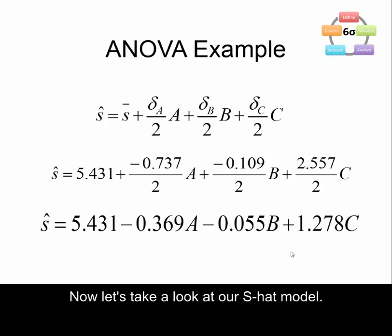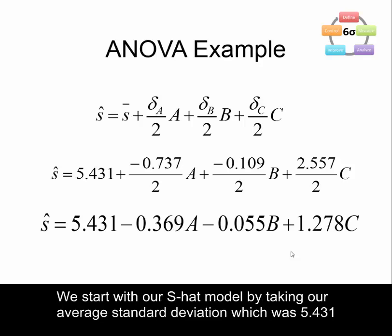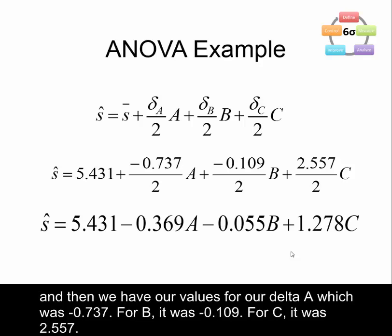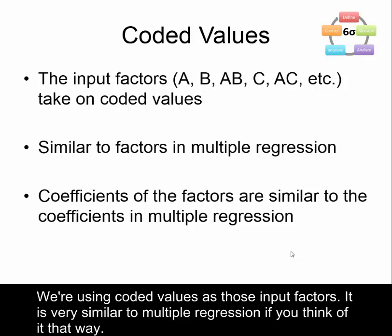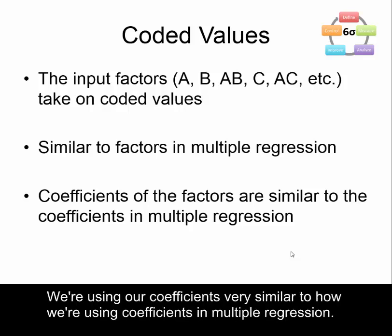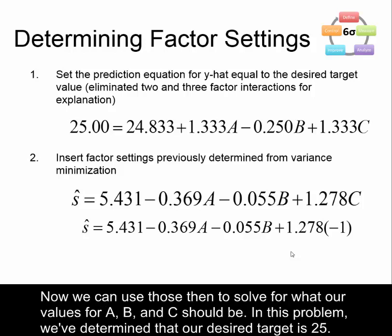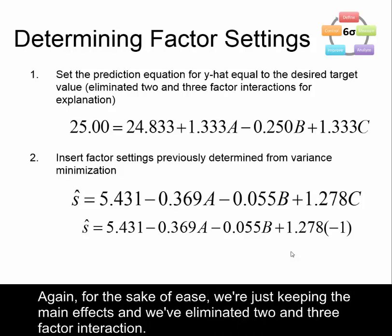Now let's look at our s-hat model. We start with our average standard deviation of 5.431, then we have delta A of negative 0.737, delta B of negative 0.109, and delta C of 2.557. When we divide our delta values by 2, our s-hat equation becomes: 5.431 minus 0.369A minus 0.055B plus 1.278C. Note that for y-hat we use capital delta and for s-hat we use lowercase delta. We're using coded values as input factors, very similar to multiple regression with coefficients.